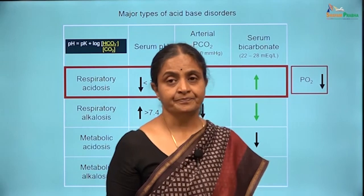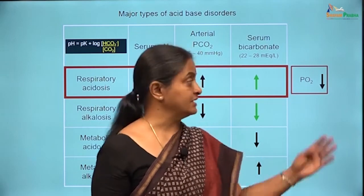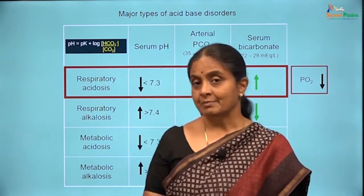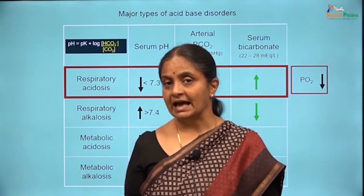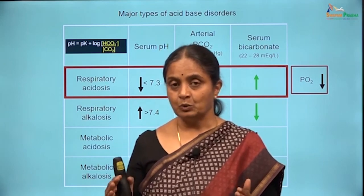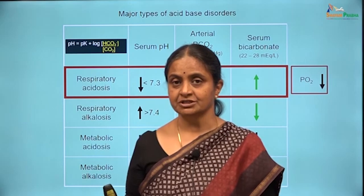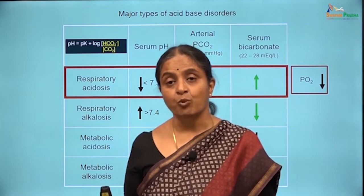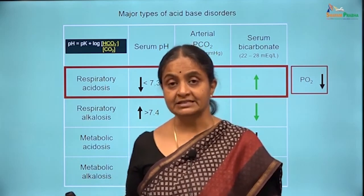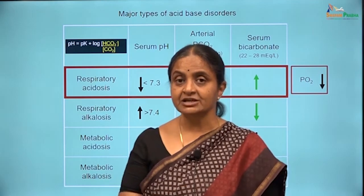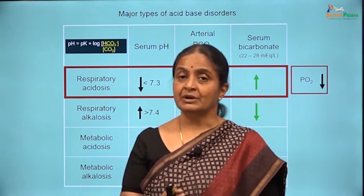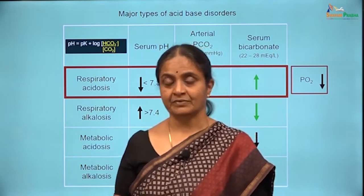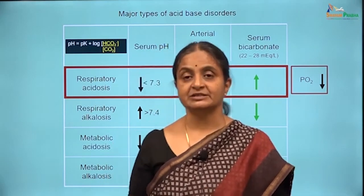In Respiratory Acidosis, almost always arterial oxygen concentration will be lower. When we discussed respiratory alkalosis, we discussed a set of conditions called hypoxic hypoxia, also referred to as type 1 respiratory failure. In this condition, there is hypoxia — a reduction in oxygen concentration — but carbon dioxide levels are normal or actually low. That is what was referred to as type 1 respiratory failure.